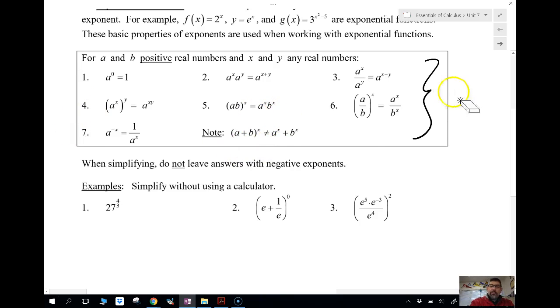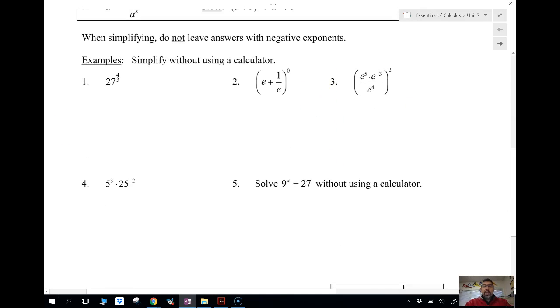Let's take a look at a few examples of these. So when simplifying, we want to leave the answers with no negative exponents. If we start with a negative exponent, we want to try to get it so that there's no negative exponents.